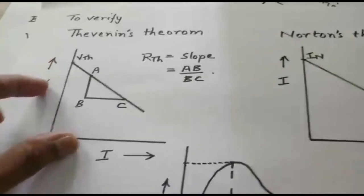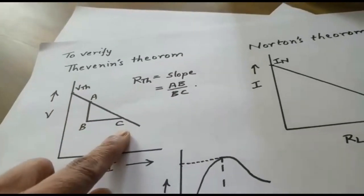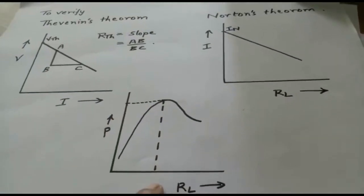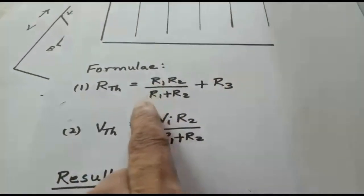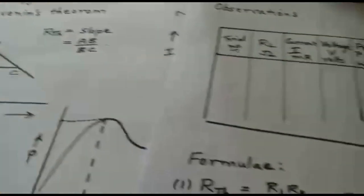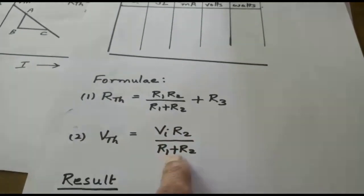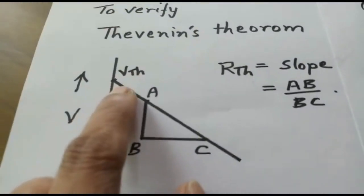Once you plot the graph, the VTH value obtained should be comparable with the theoretical value, and the RTH value obtained from the slope of the V-I graph should also match the theoretical value. The formula for RTH is: RTH = (R1·R2)/(R1 + R2) + R3. With R1 = R2 = R3 = 200 ohms, calculate RTH and compare with the graph slope to verify. VTH = VI × R2/(R1 + R2); with VI = 10 volts and R1 = R2 = 200 ohms, calculate VTH and compare with the graph.